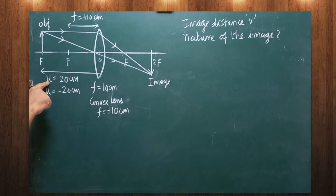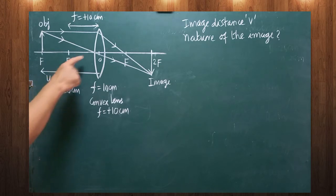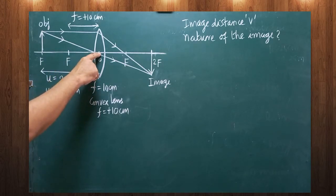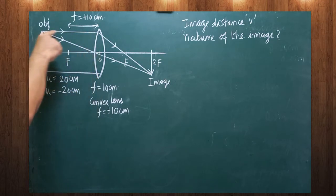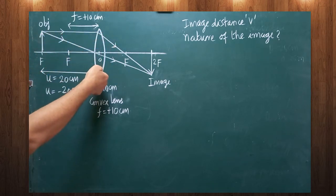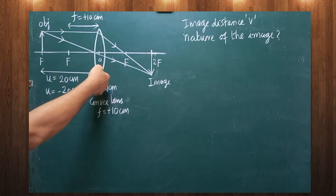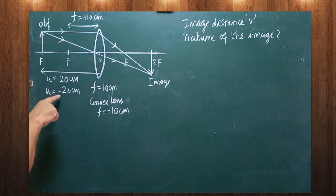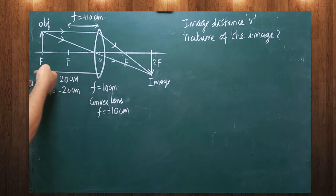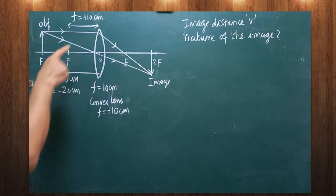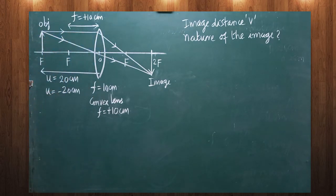In front of the lens, the object is kept at a distance of 20 centimeters — that is the object distance. All distances must be measured only from the optic center. The ray travels in one direction, but the distance is measured from the center against the direction of the ray, so the object distance must be taken as negative. Therefore, u is written as minus 20 centimeters.